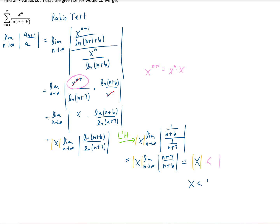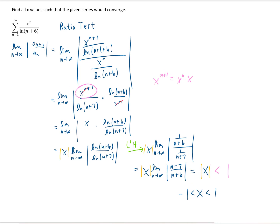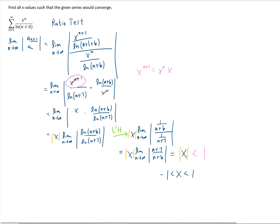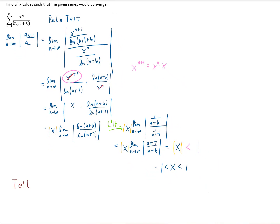Rewriting this as a compound inequality says that our x value needs to be between negative one and positive one for this original series all the way back here to converge. As always, though, we need to test the endpoints of this interval, and in this example, that means plugging in x equals negative one and plugging in x equals one back into this original sum to see if that sum converges for those two x values. The reason we have to do this again is because these endpoints correspond to when the ratio test limit would equal one. And the ratio test is inconclusive when that limit equals one. So we need to test those endpoints by hand.